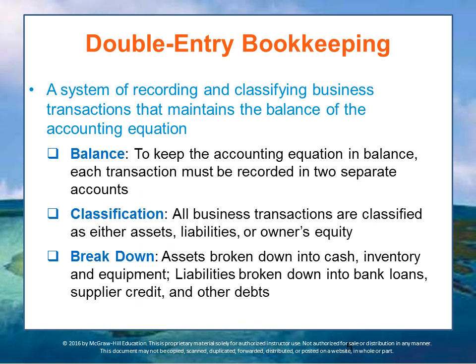Double-entry bookkeeping is a system of recording and classifying transactions into separate accounts in order to maintain the balance of the accounting equation. To keep the equation in balance, each business transaction — every time something is bought or sold — is recorded in two separate accounts. In the final analysis, all business transactions are classified as assets, liabilities, or owner's equity. However, most organizations further break down these accounts to provide more specific information about the transaction.